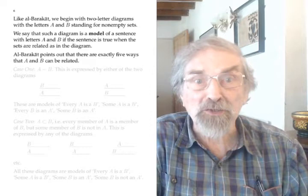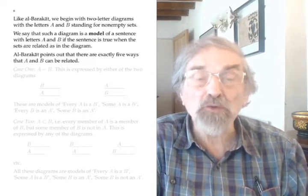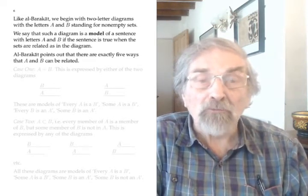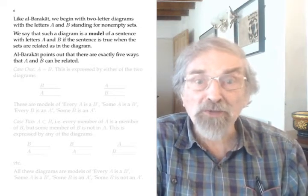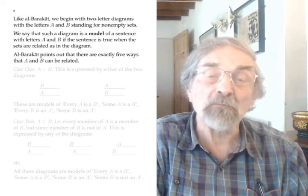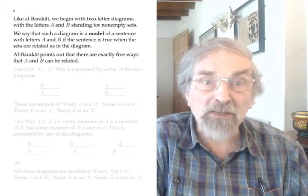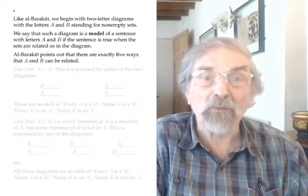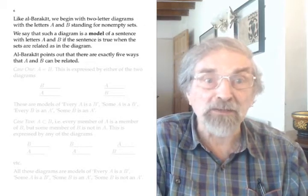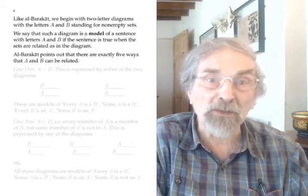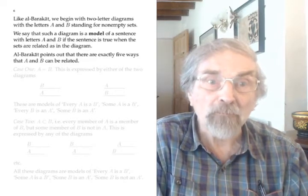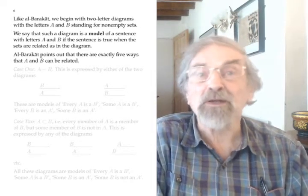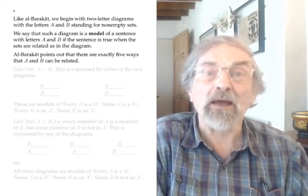To explain the possible relationships, we'll go first to the case of two lines with two letters — this is what al-Barakat himself does. For each possibility, he asks which of the sentences are true in this case. If the diagram makes a sentence true, we will say that the diagram is a model of the sentence. A model of a premise pair is a diagram that's a model of both sentences in the pair — it makes both premises true. Al-Barakat expresses the same thing in other words; for example, he talks about the diagram 'setting out the facts.'